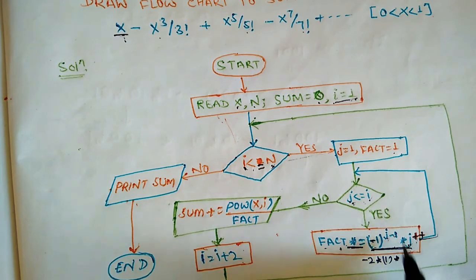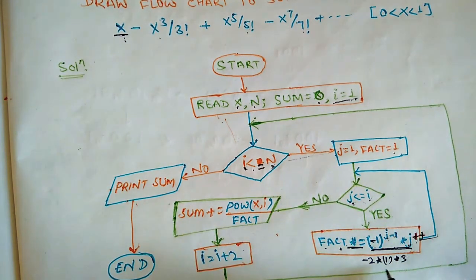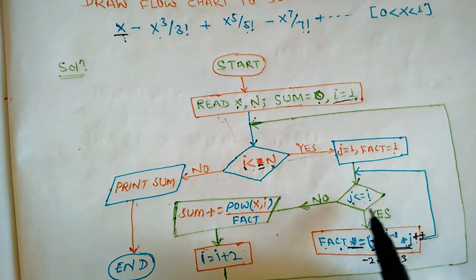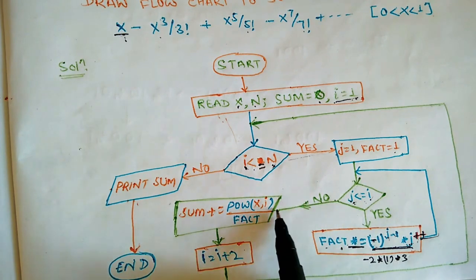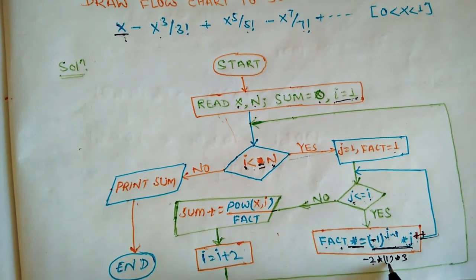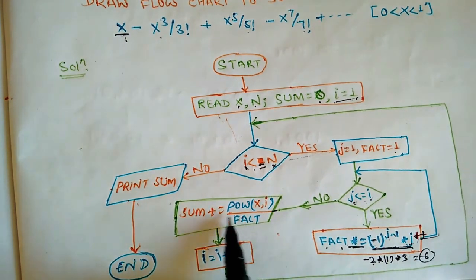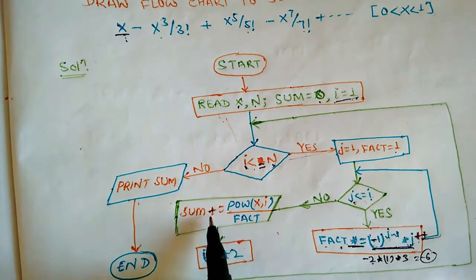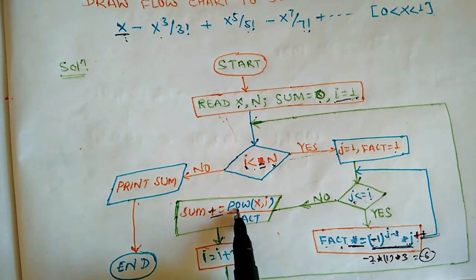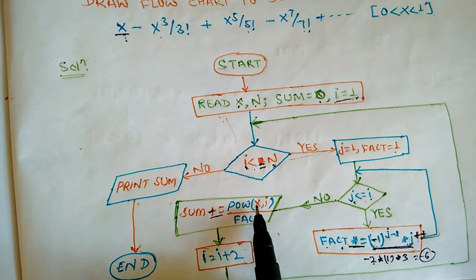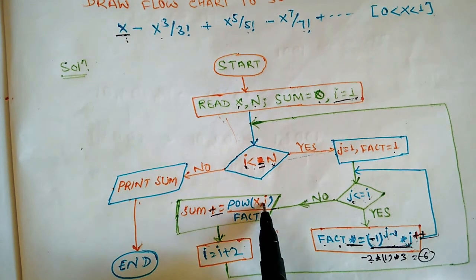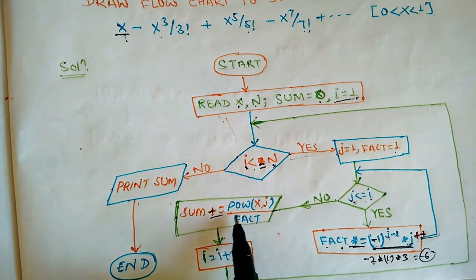After j increments to 4, if the condition j less than or equal to i is false, the inner loop exits. The factorial value is -6. Then we calculate sum: sum = sum + x to the power i divided by fact. You can assume x is between 0 and 1, so x to the power i divided by fact.